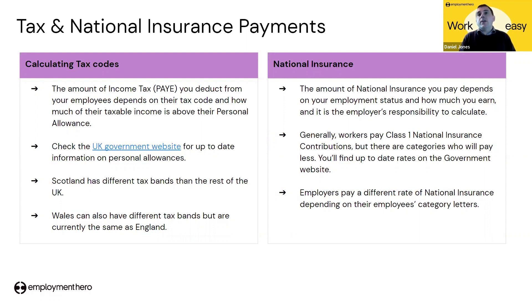The amount of national insurance you pay depends on the employee's status and how much they earn, much like PAYE, and it's the employer's responsibility to calculate. Generally, workers pay Class 1 National Insurance contributions, but there are categories where they pay less — for example, if an employee is above state pension age and still working. That is determined by the national insurance category letter. PAYE is paid only by the employee, whereas national insurance is paid by both the employee and the employer.